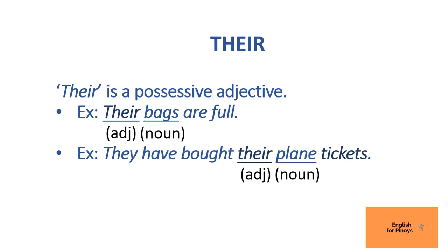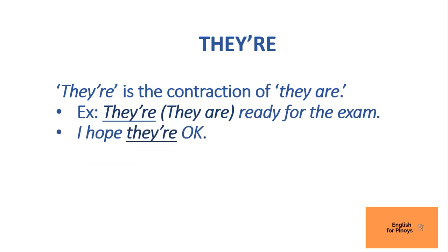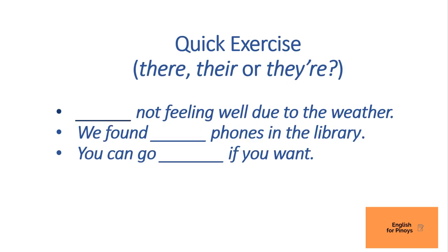So to summarize: T-H-E-R-E is either an adverb, a pronoun, a noun, or an interjection. T-H-E-I-R is a possessive adjective — it modifies a noun and tells you what a noun is about. And T-H-E-Y apostrophe R-E is the contraction of 'they are'.